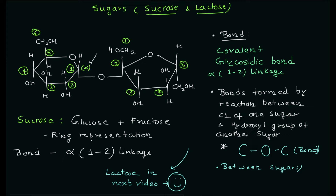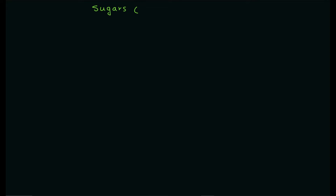We'll also understand the covalent glycosidic linkage between the two monomeric units of the sucrose molecule. So without any delay, let's start. The title for today's video is sucrose and lactose — two important sugars essential for most living things. When we talk about sucrose, the first thing that comes to mind is table sugar.